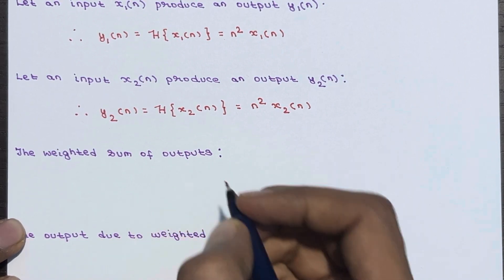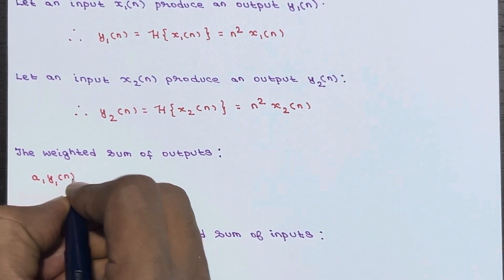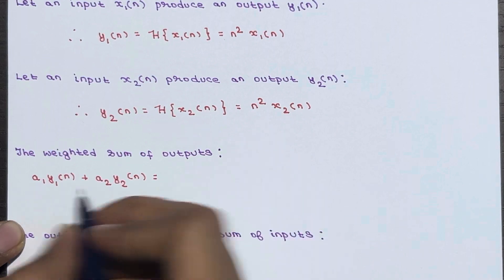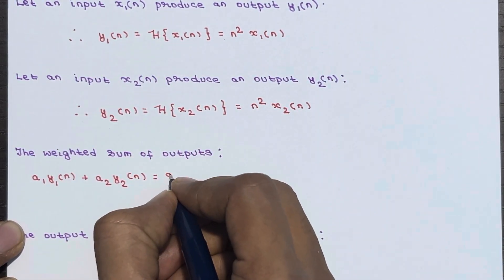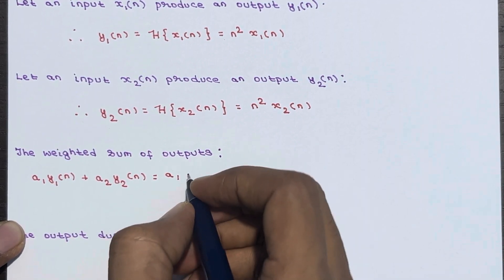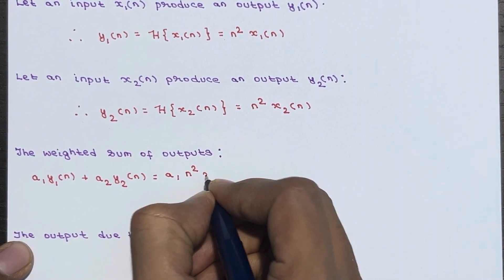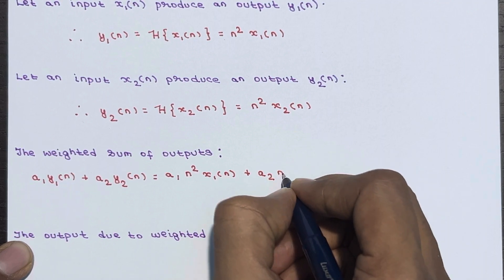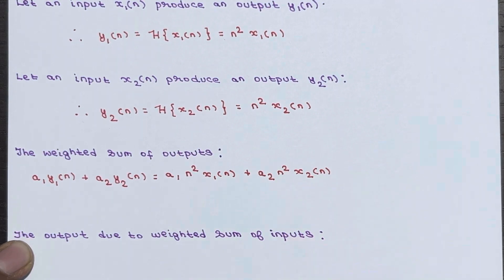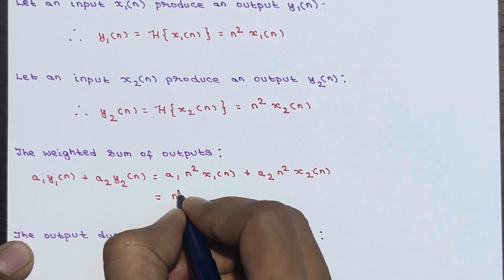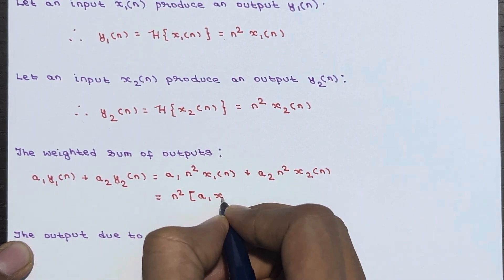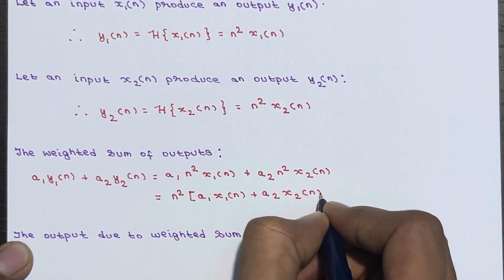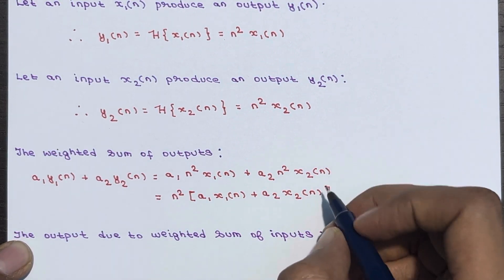Now we are going to calculate the weighted sum of outputs. The weighted sum of outputs means you calculate a1·y1(n) + a2·y2(n). Substituting the known values: a1·n²·x1(n) + a2·n²·x2(n). Taking n² as a common factor gives n²·[a1·x1(n) + a2·x2(n)]. This is the weighted sum of outputs.